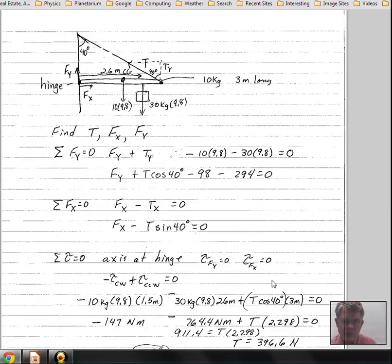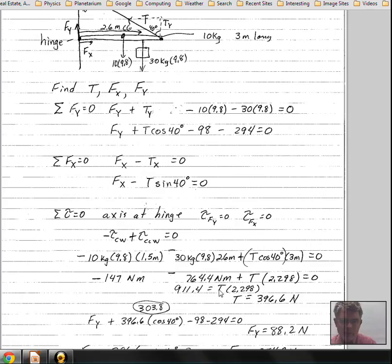Well, T times sine of 40 degrees, that's a force in the X direction. It has no torque. We need something perpendicular to our lever arm. So simplifying this and setting it up with the clockwise torques being the negatives,